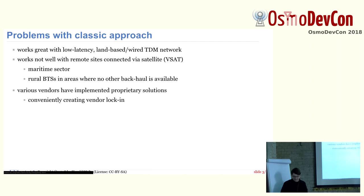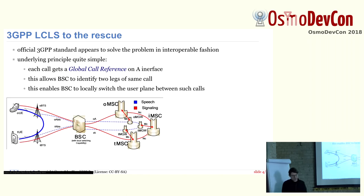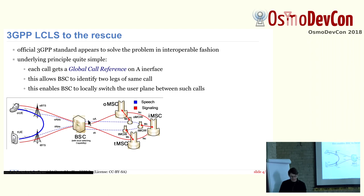We have 3GPP Local Call Local Switch as a 3GPP-specified extension in later releases — I don't recall the exact release where it was introduced — where we want to change this. The red line in this diagram is how the signaling goes, and the blue dashed line is how voice traditionally would go. The thick blue line here is basically the shortcut that we introduce with Local Call Local Switch.